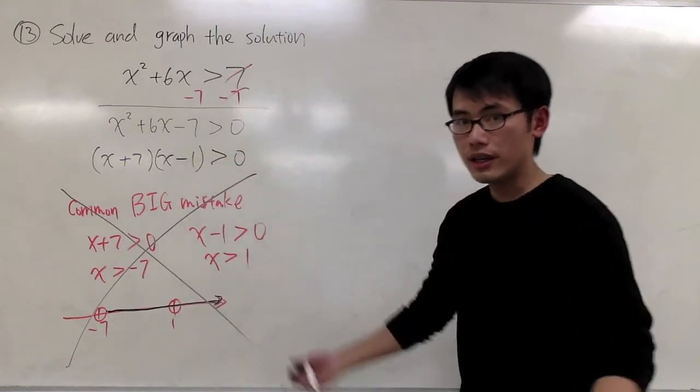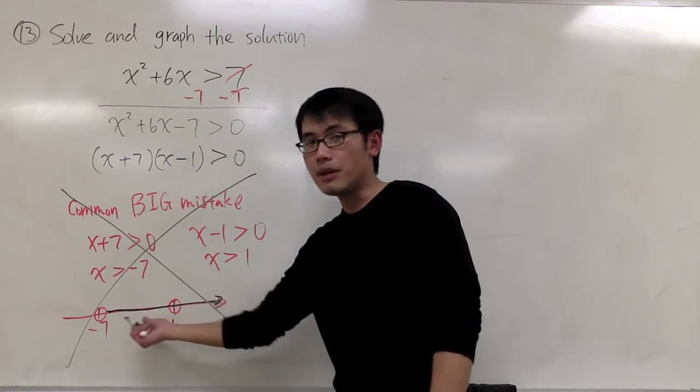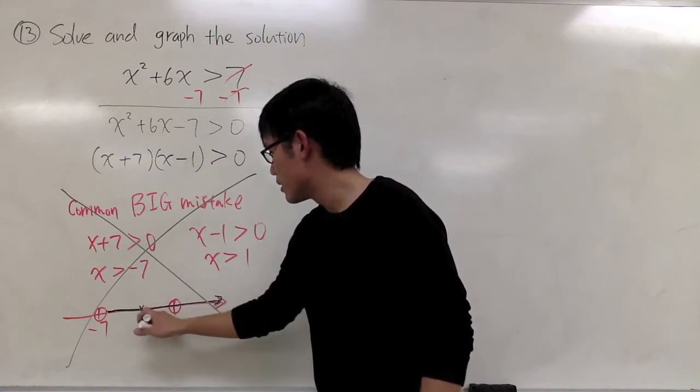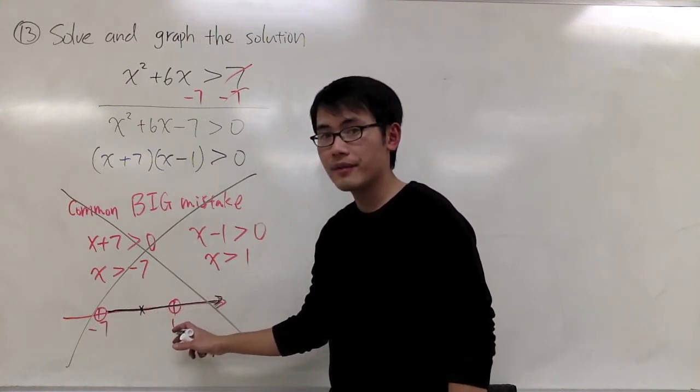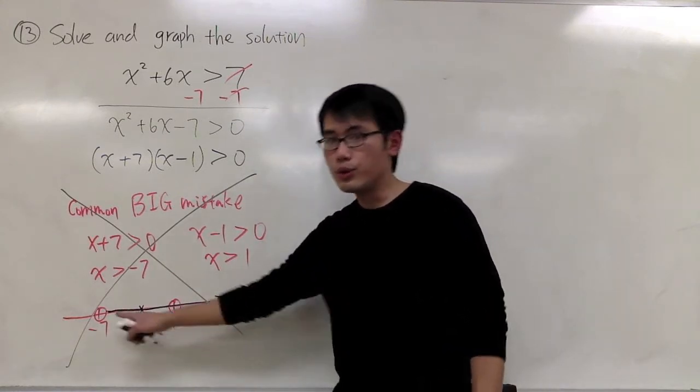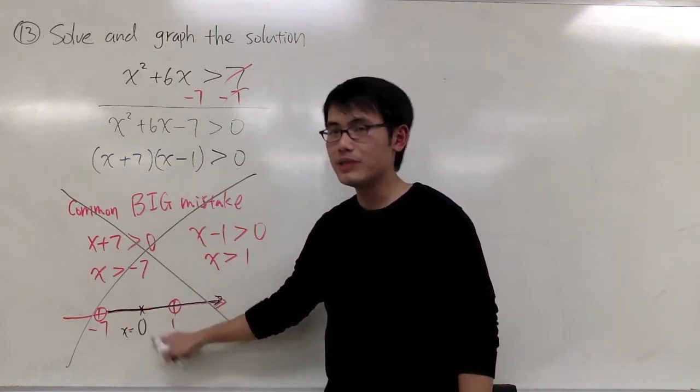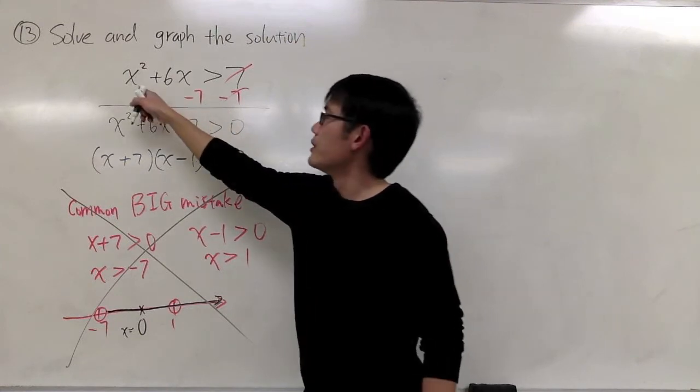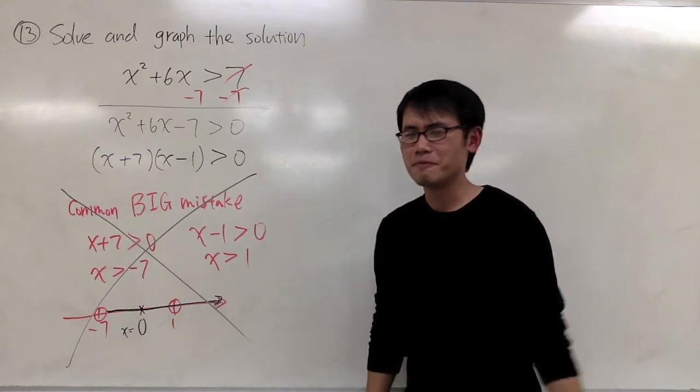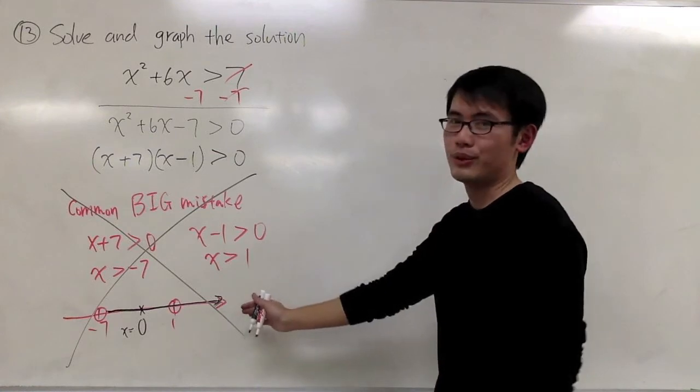You can even go further. You can pick any numbers on this number line that you just drew. Because I have negative 7 and 1 right here, 0 is in between. If you do it like this, you are saying x can be 0. But if you plug in 0 into the original inequality, you get 0 plus 0 is greater than 7. Once again, that doesn't make sense. So this is just a mistake. This is not the way to do it.